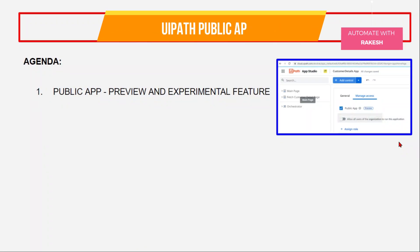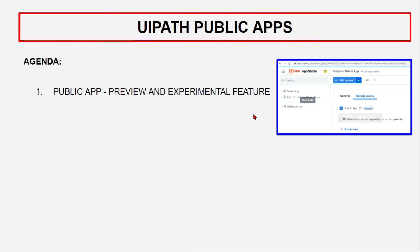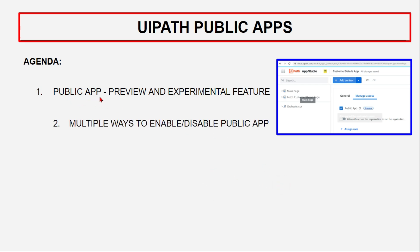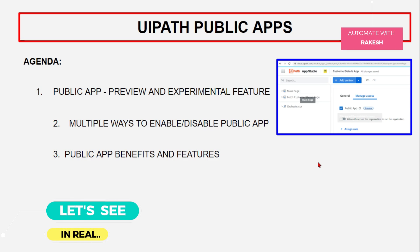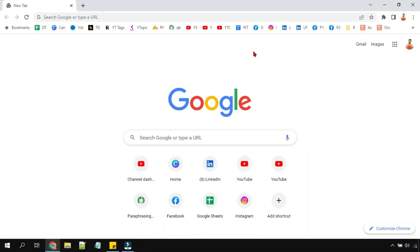In this video I'm going to discuss UiPath public apps — how you can make an app go public and what that means. The agenda covers: understanding the public app preview, which is an experimental feature; multiple ways to enable or disable public apps; and the benefits and features associated with public apps.